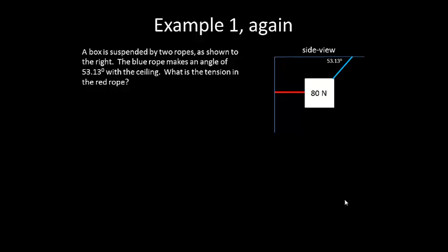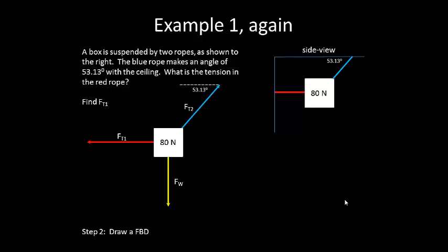So let's go back to our problem. What is the tension in the red rope? We're trying to find FT1. We'll define that as T1. And we're going to draw a free body diagram. And we will pick a direction to solve for.